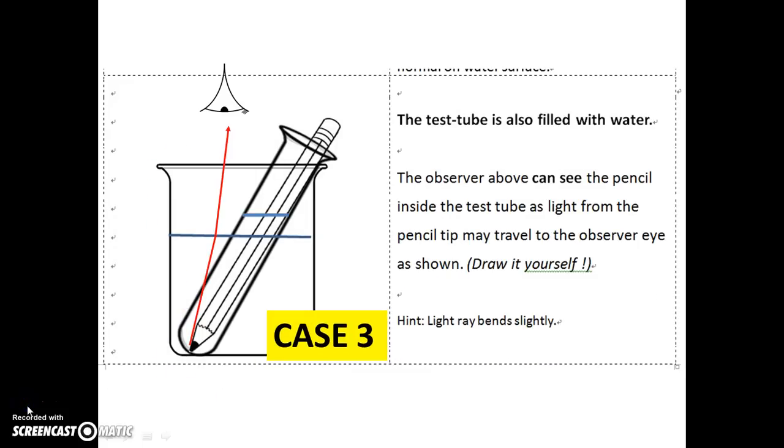And then it is case 3. There is water in the test tube as well as in the beaker. The light ray from the tip of the pencil goes from water to glass to water again, almost without deflecting. And then there is a reflection on the water surface, but all the way you can see the light ray go almost vertically straight to the observer eye.